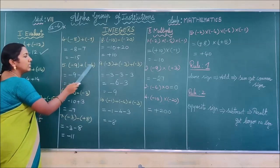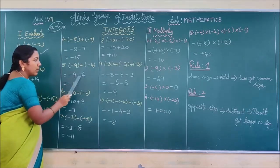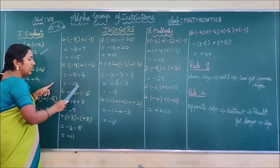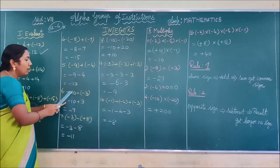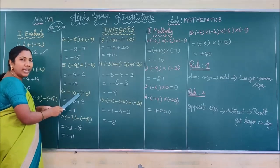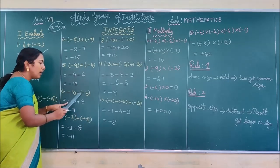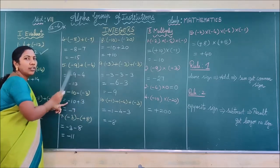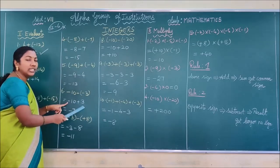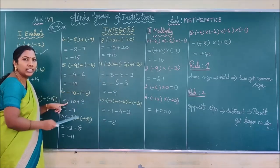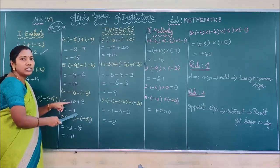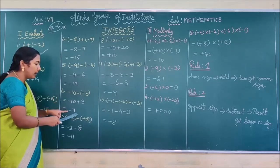See: minus 9 plus (minus 4). Write minus 9 as it is, plus into minus gives minus 4. Same sign, so add: 9 plus 4 = 13, result takes common sign minus — answer is minus 13. Similarly: minus 10 minus (+3). Here the sign outside is minus. Minus 10, then minus into plus gives minus 3. Now opposite signs: subtract smaller from larger. 10 minus 3 = 7, and the larger number 10 has sign minus. So the answer is minus 7.